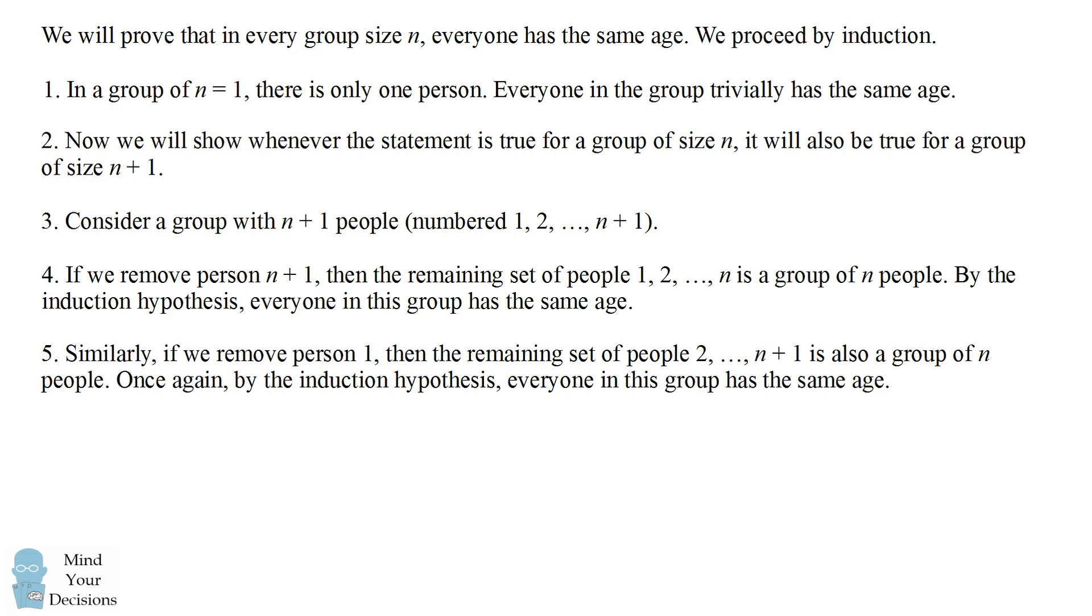Similarly, if we remove person 1, then the remaining set of people from 2 to n plus 1 is also a group of n people. Once again, by the induction hypothesis, everyone in this group has the same age.